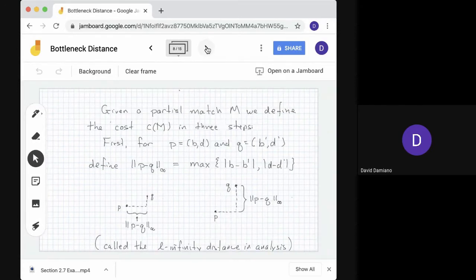So given a partial match, we want to measure a distance. So in order to create this distance, we have to do a couple of things first. First, we need to define what's called the L infinity distance that comes from analysis. That's between a pair of points. What we do is we take the difference in the B direction and the difference in the D direction, take the absolute value. We don't know which one will be bigger based on the order. And then we take the maximum of the absolute values.